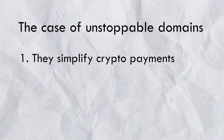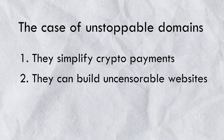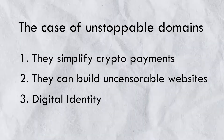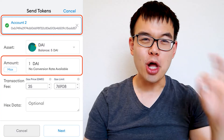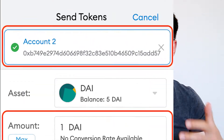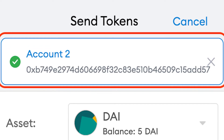The first thing is that they simplify crypto payments. The second thing is that they can build uncensorable websites. The third thing is digital identity. Blockchain domains replace these super long crypto wallet addresses with a human readable name such as .crypto, .nft, or .zill in the case of unstoppable domains.